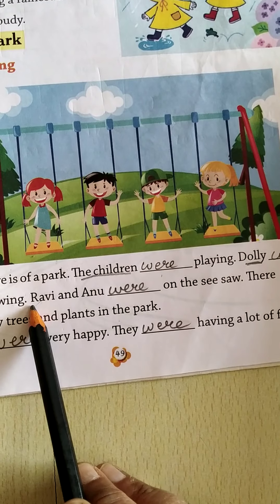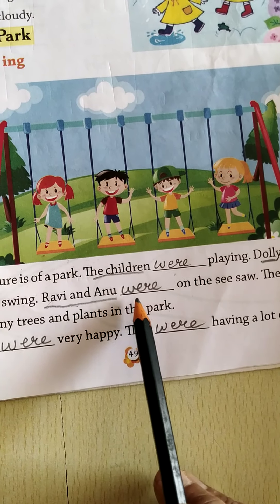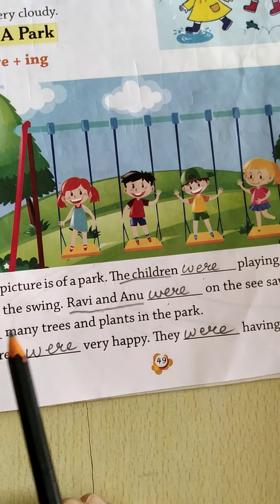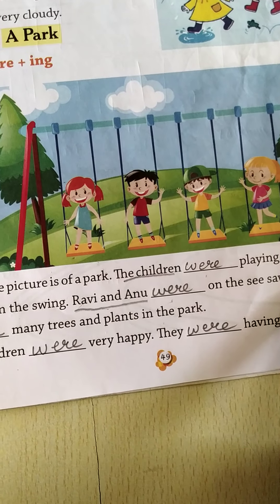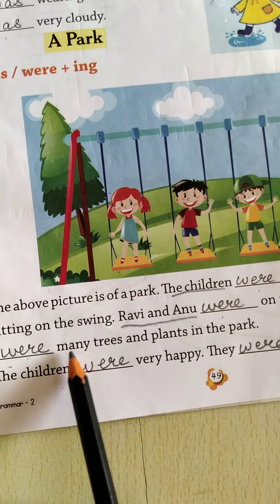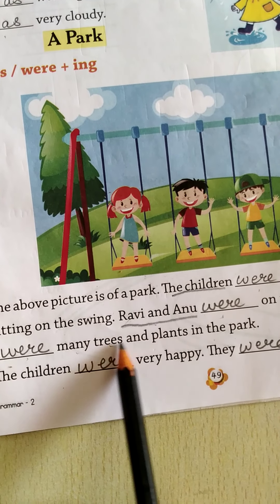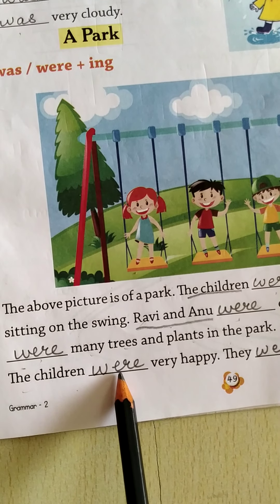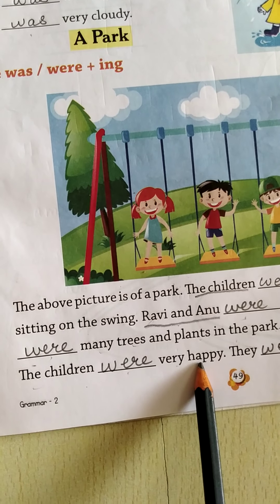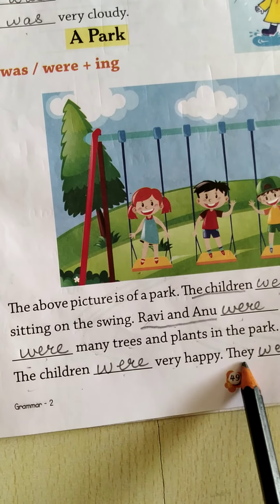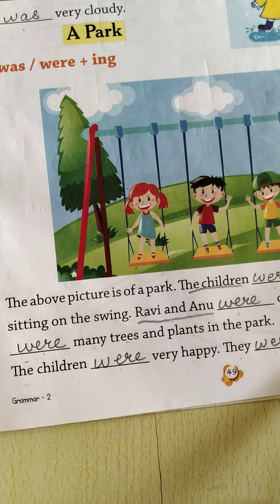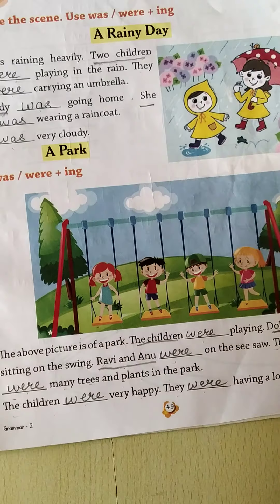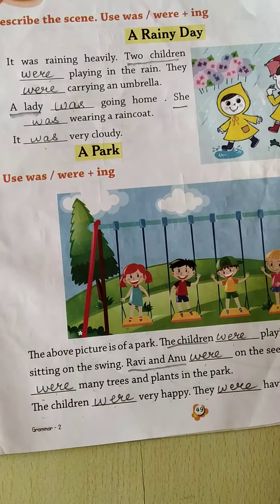Ravi and Anu — they both are two children, so we are using were. There were many trees and plants in the park. The children were very happy. They were having a lot of fun. That's all for today. Take care.